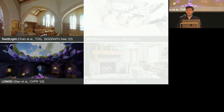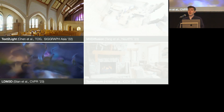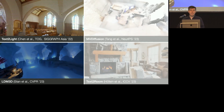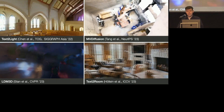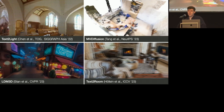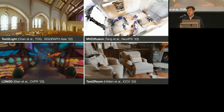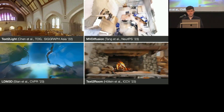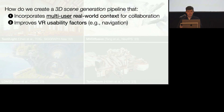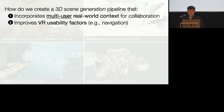On the other hand, recent generative approaches can produce rich and diverse virtual environments autonomously, including panoramic skyboxes such as in text-to-light and LDM3D, and mesh-based environments such as MV Diffusion and text-to-room. However, these methods often generate fully synthetic scenes that lack grounding in the real world, and do not consider VR usability criteria such as comfortable navigation. So in this work, we set out to explore a system that autonomously creates environments with generative techniques, but also incorporates real-world context of multiple distinct users for the purpose of collaboration, and secondarily aims to improve VR usability factors to enable usage in a VR telepresence scenario.